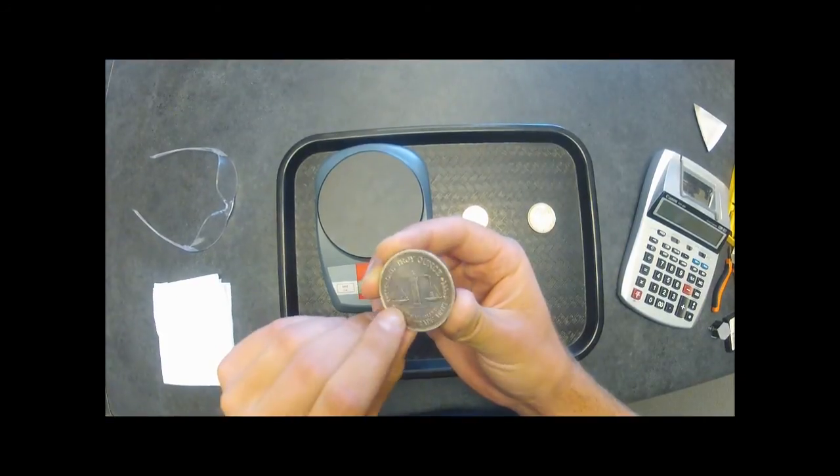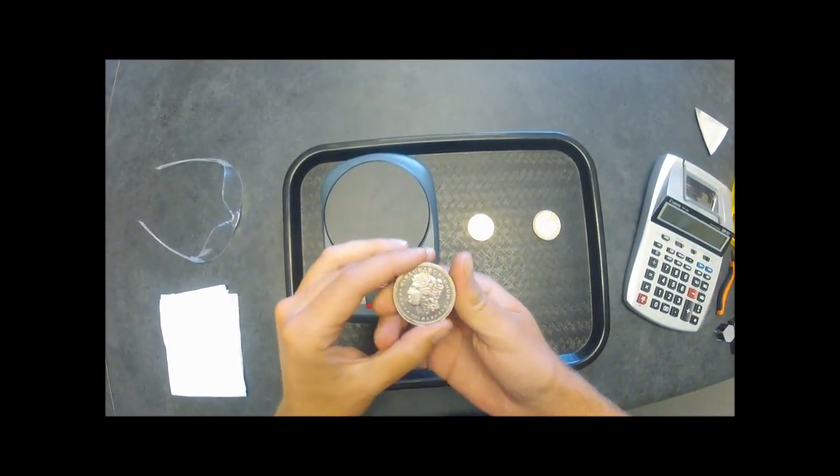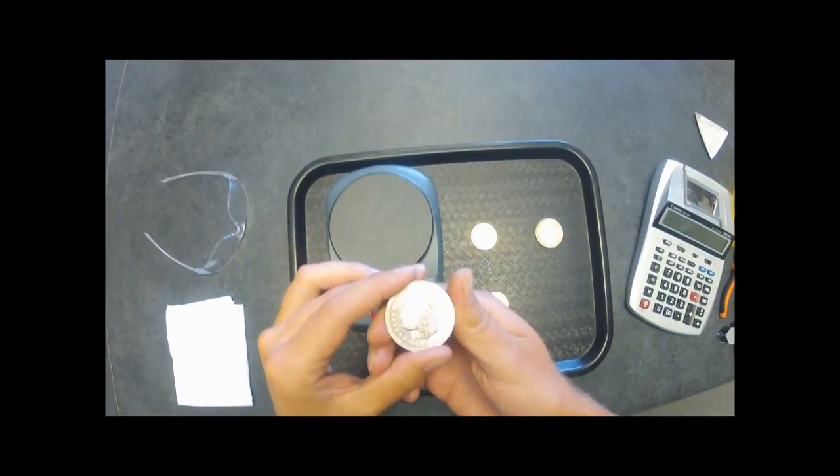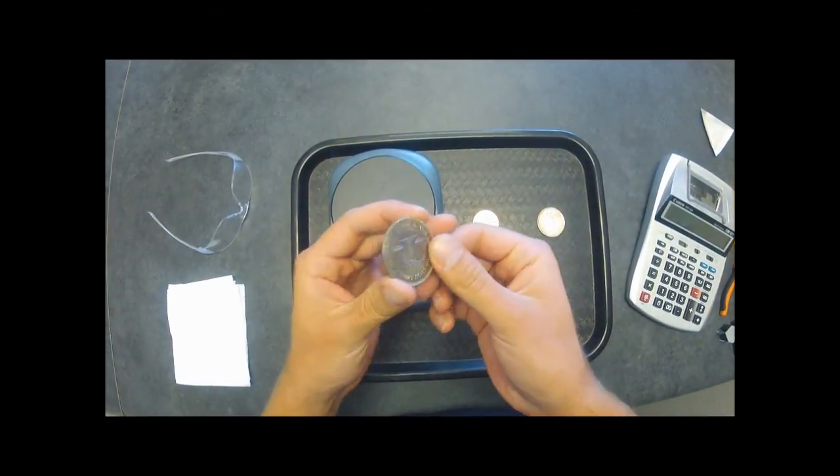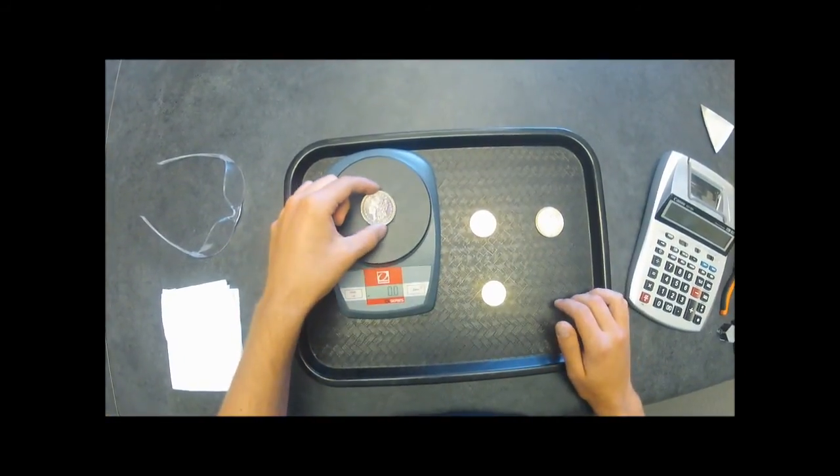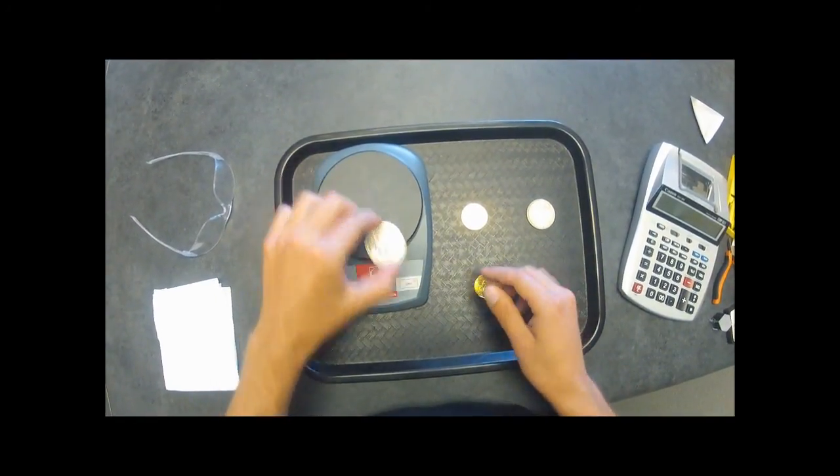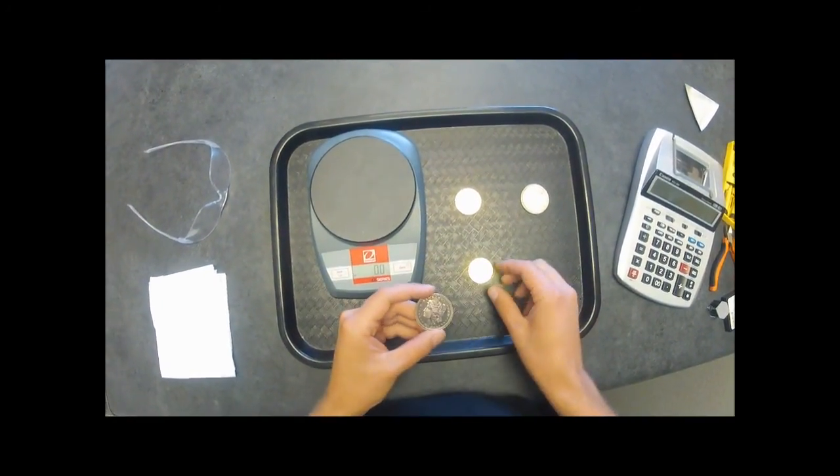Next one here, it's a one troy ounce three nine silver. Normally with the silver you want to wear gloves when handling them so they don't get tarnished, but as you can see this one's already pretty tarnished, so I'm not too concerned about it. It should also weigh 31.1 grams. And there's 31.2.